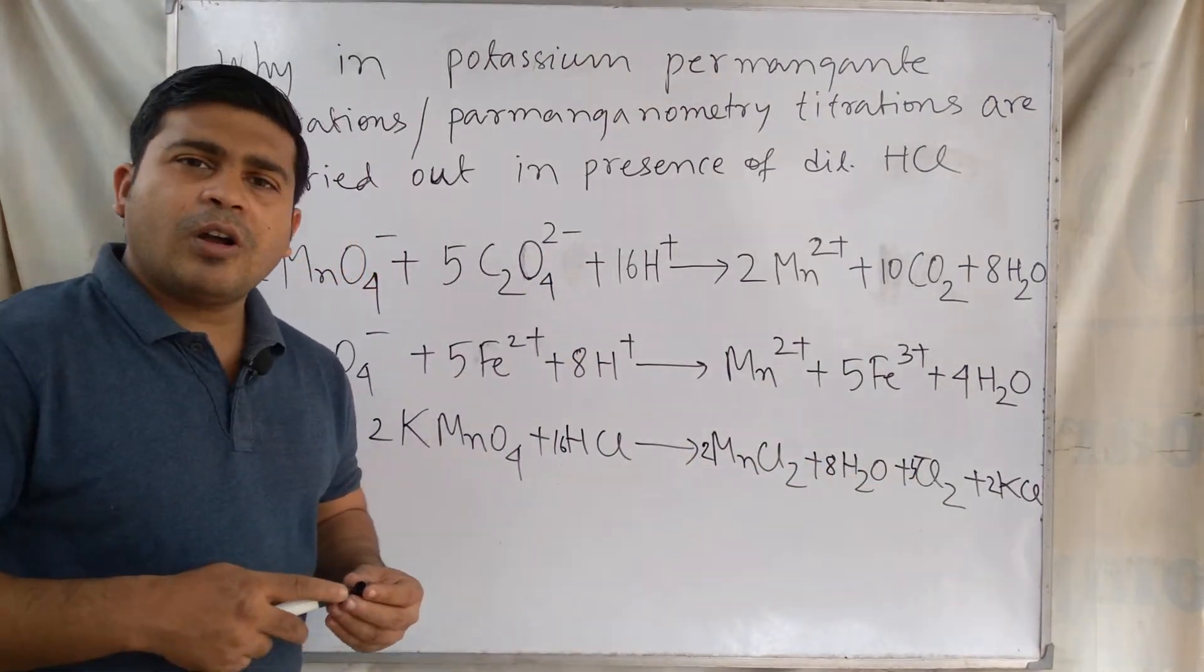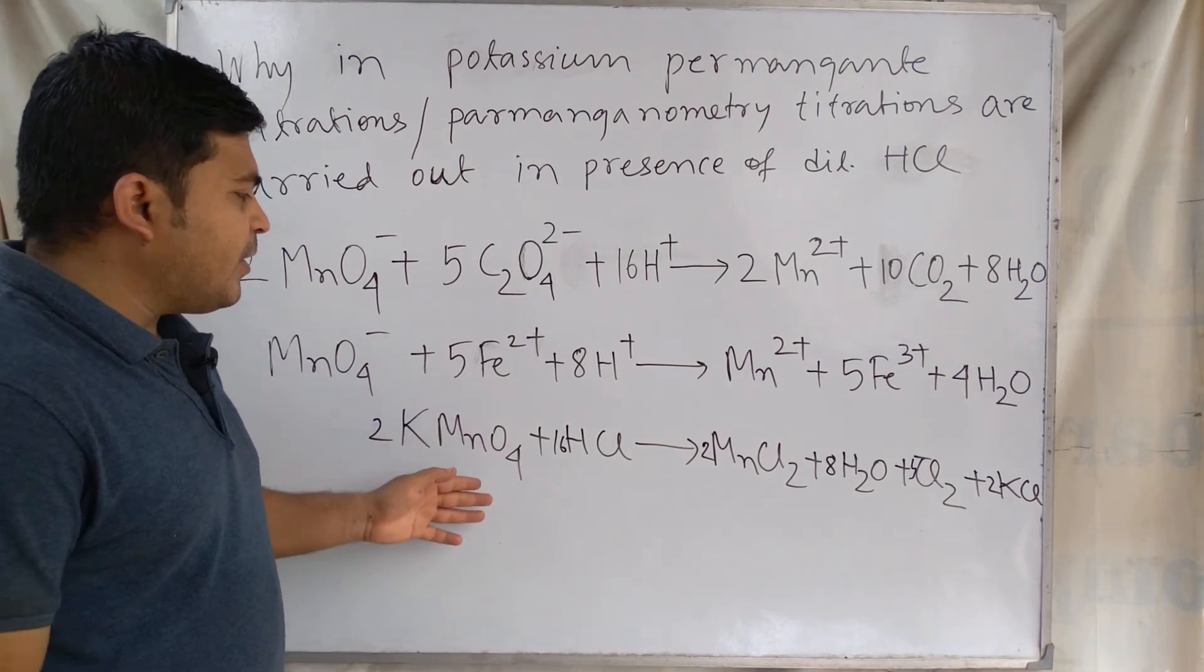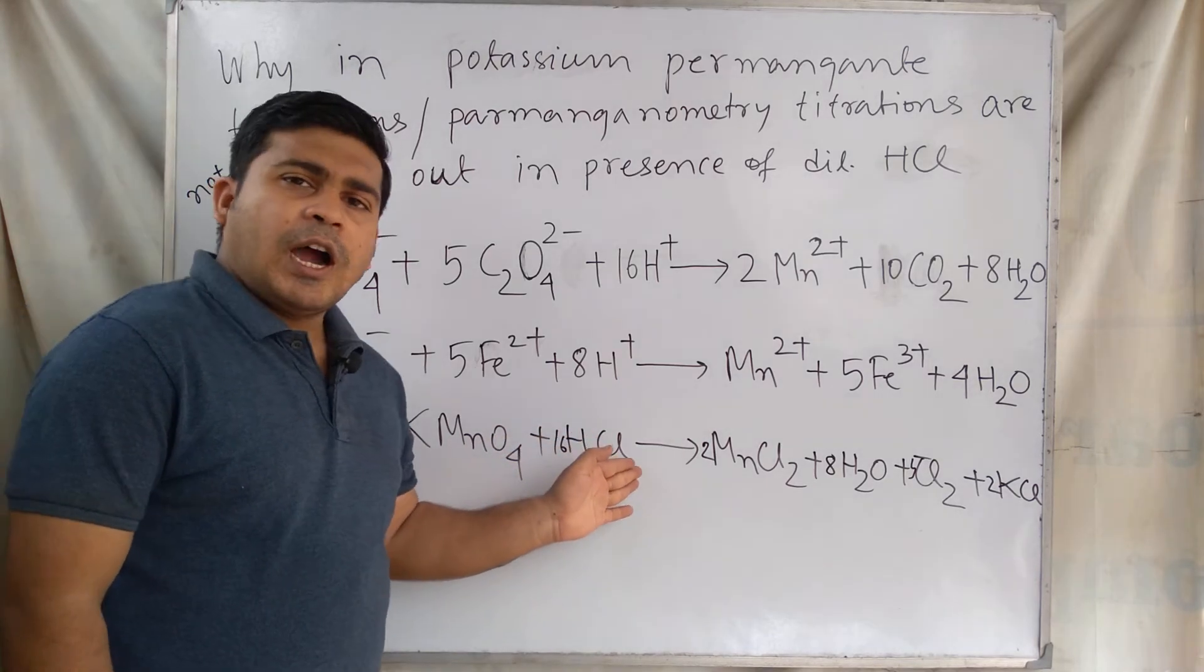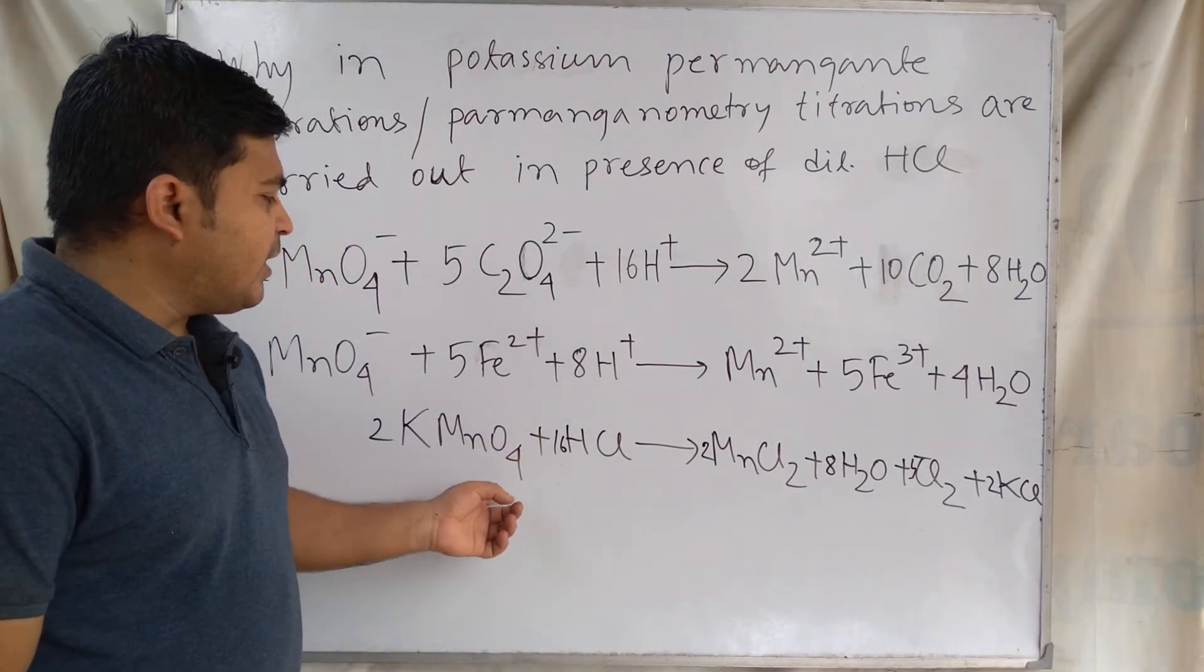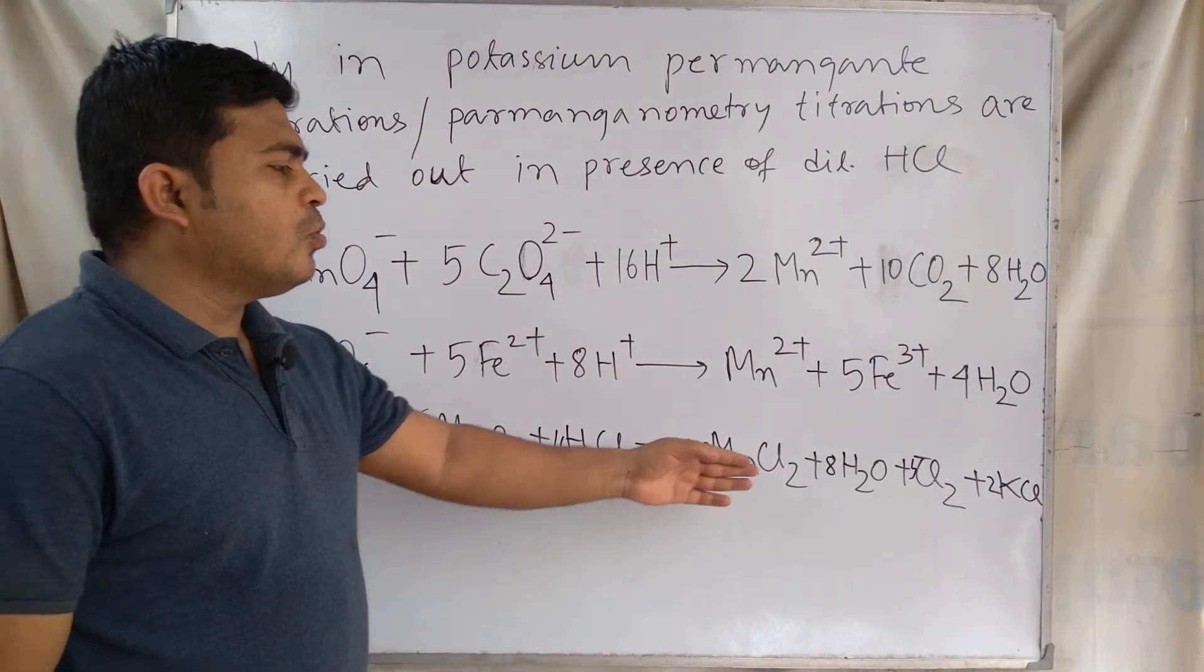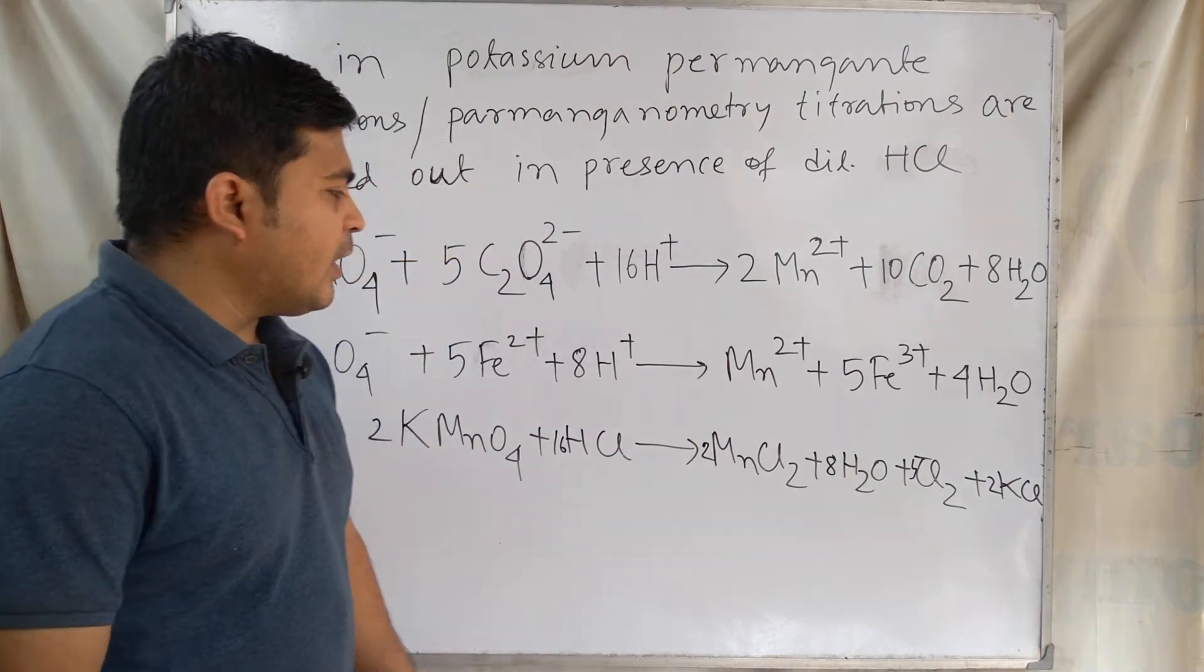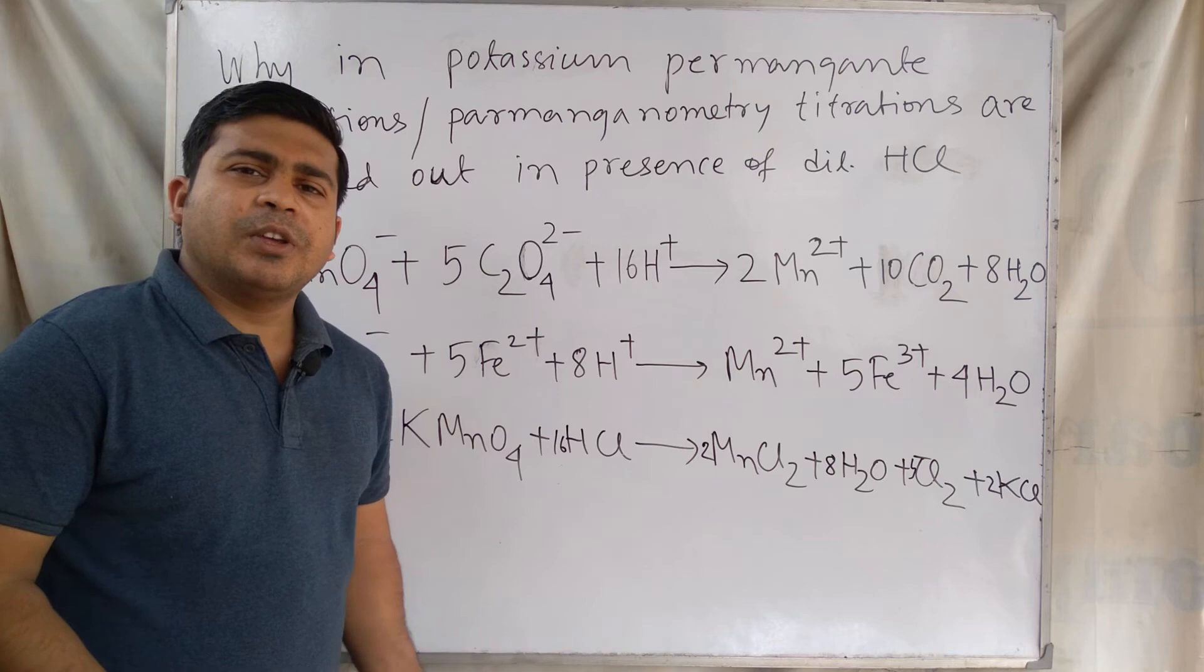So an error occurs in the titration. If we use hydrochloric acid, since potassium permanganate is an oxidant, it oxidizes the chloride ion to chlorine. As a result, error occurs in the quantitative estimation.